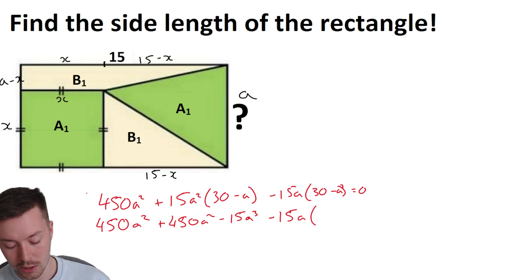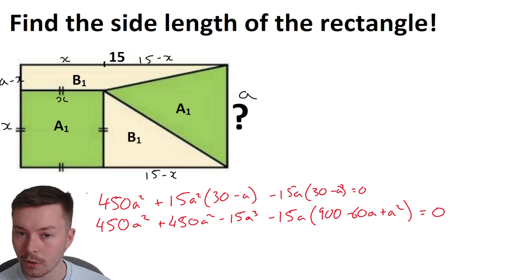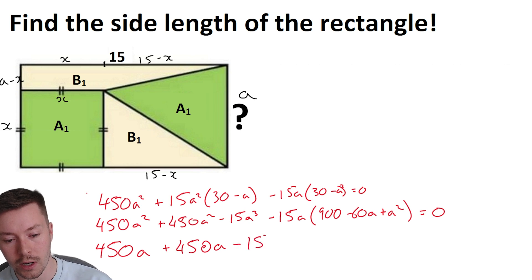So 30 times 30 is 900 minus 60A, and then we have got plus A squared, because you've got negative A times negative A. Now, what I can now do is I can factorize A out of all of this straight away, or essentially divide by A, because if I'm factorizing out the A and it's equal to zero, then one of my solutions will be A equals zero, which we know is not going to work anyway, because we've got to have some height to this rectangle. So I can divide everything by A immediately, that'll make things easier. So 450 A plus 450 A minus 15 A squared. Okay, so that's going to help get us the quadratic.